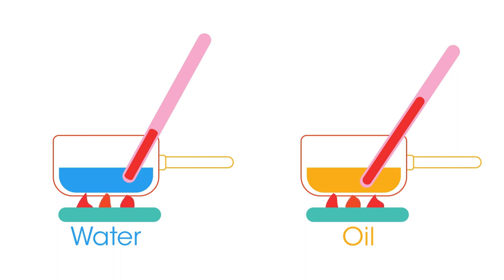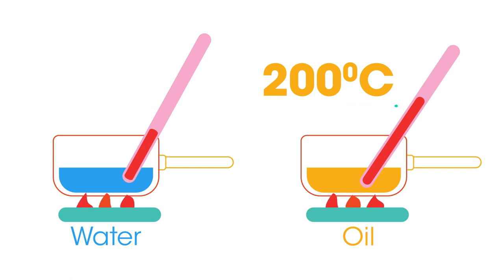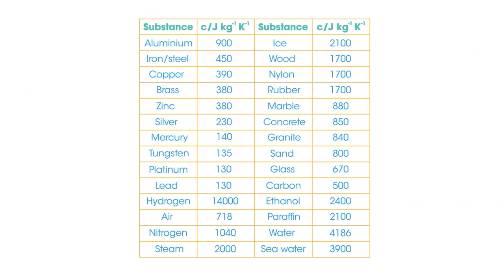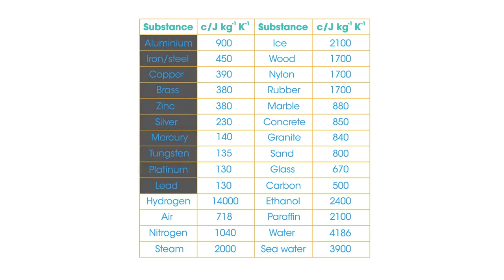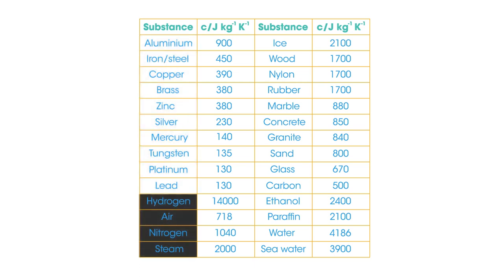Oils have a much lower specific heat capacity than water, so they heat up much quicker when exposed to an identical heat source. This is why we are often surprised how fast a pan of oil heats up when cooking. The same mass of oil will heat up about twice as fast as water, reaching 200 degrees Celsius in the time it takes water to boil. You might want to pause the video to take in the data shown here, which shows the specific heat capacities of a range of substances. Notice how the value for metals gets lower as the atomic mass increases, and materials made up of lighter elements have a much higher figure.